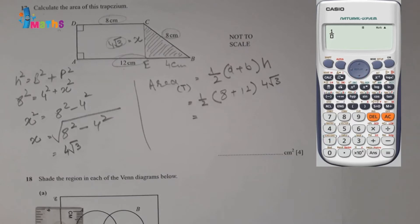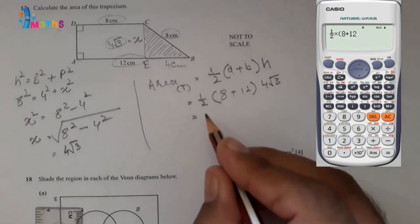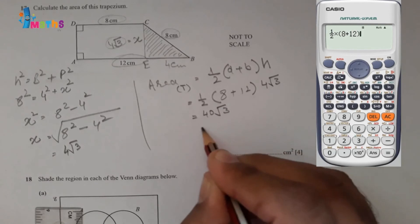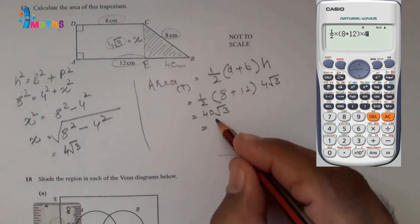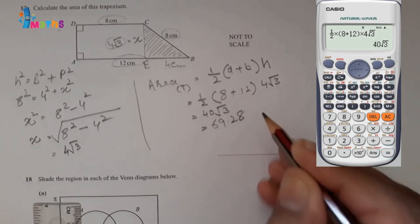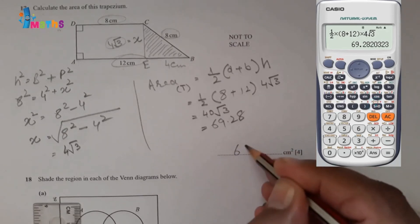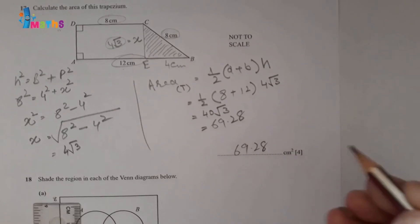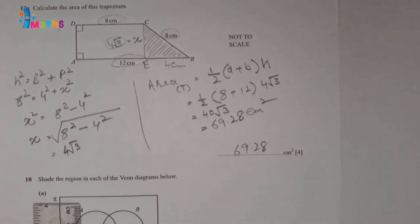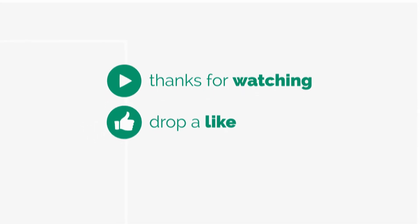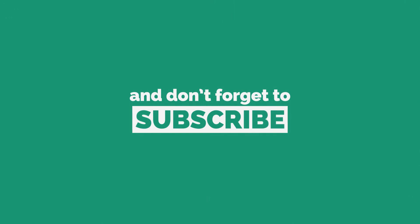Using the calculator: one half multiplied by (8 plus 12) multiplied by 4 root 3 equals 40 root 3. In decimal notation this is 69.28, so the answer is 69.28 centimeters squared.